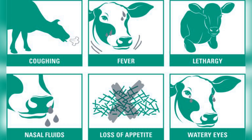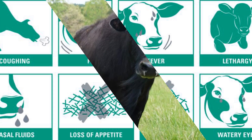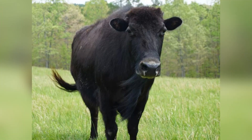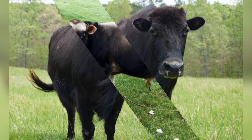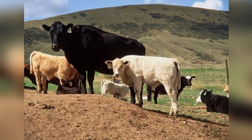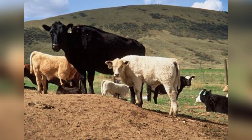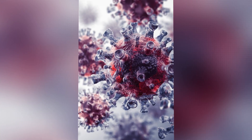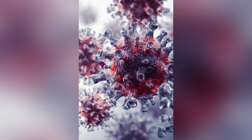Diseases in beef cattle arise due to bacteria, viruses, parasites, and environmental factors. Many of these illnesses spread through direct contact, contaminated feed and water, vectors like insects, or poor management practices. Therefore, farmers must take proactive steps to reduce disease risks, including vaccination, biosecurity measures, proper nutrition, and good husbandry practices.